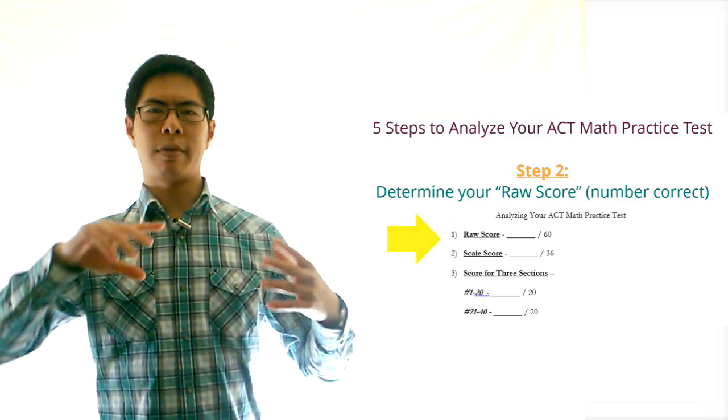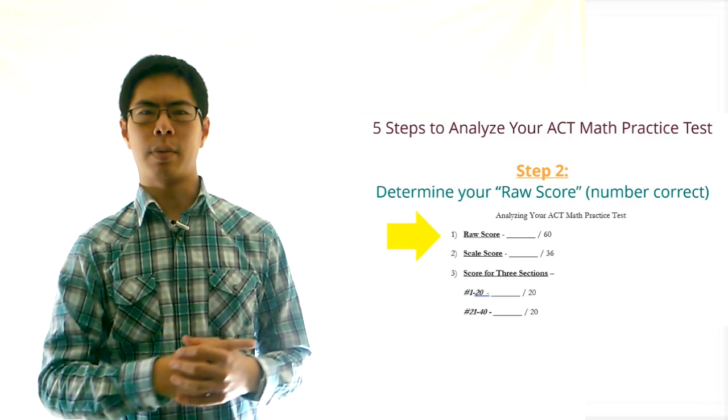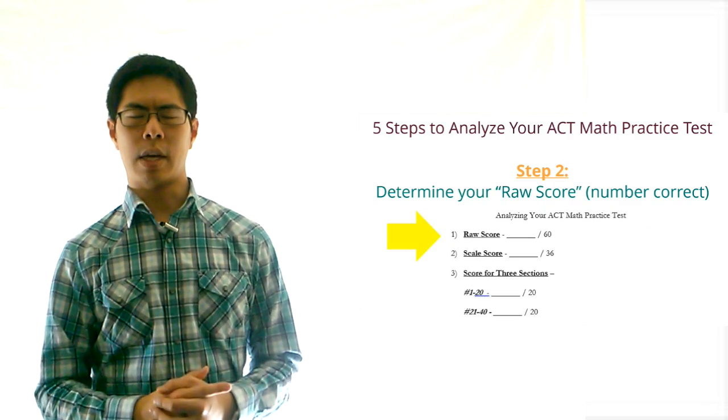Step 2. Count up the total number of questions that you missed, subtract this number from 60, and write your raw score in the blank labeled raw score.